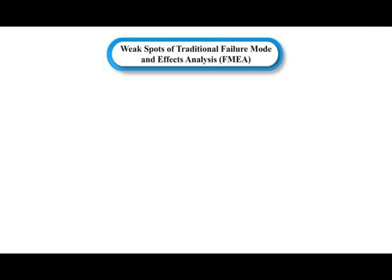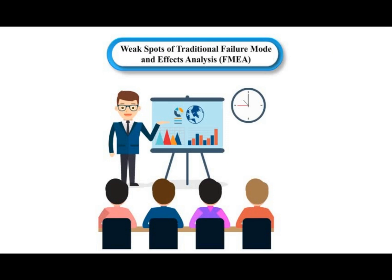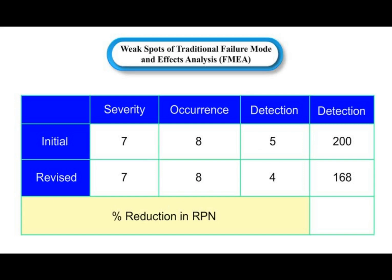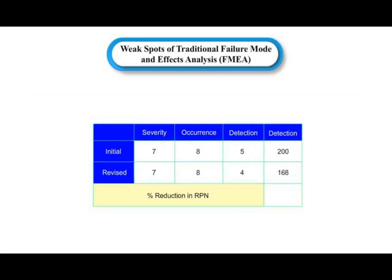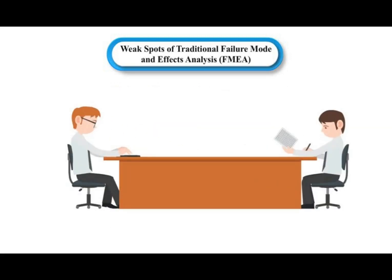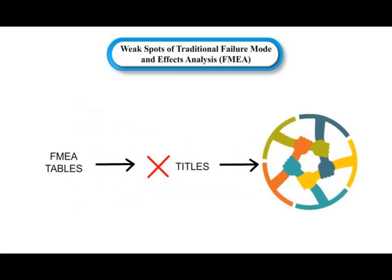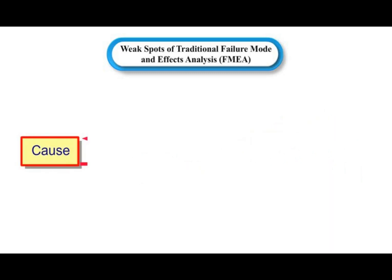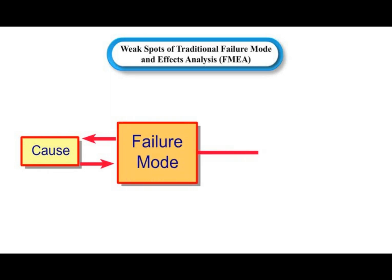Weak spots of traditional Failure Mode and Effects Analysis. The major problems in FMEA are: the RPN is calculated through a complex process, as the severity, occurrence, and detection scores are complex to perform. There is a chance that the same RPN value can occur for different combinations of severity, occurrence, and detection. The success of FMEA relies on effective retrieval of tables and other relevant information to prevent recurrence of failures. FMEA tables do not incorporate titles, which can be filled only through team effort, and it does not assure accuracy in estimating the mode and effect of failures.